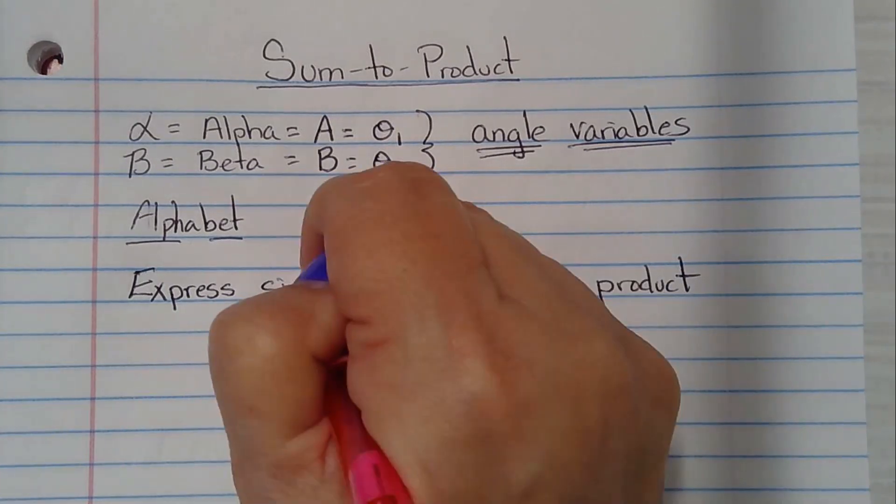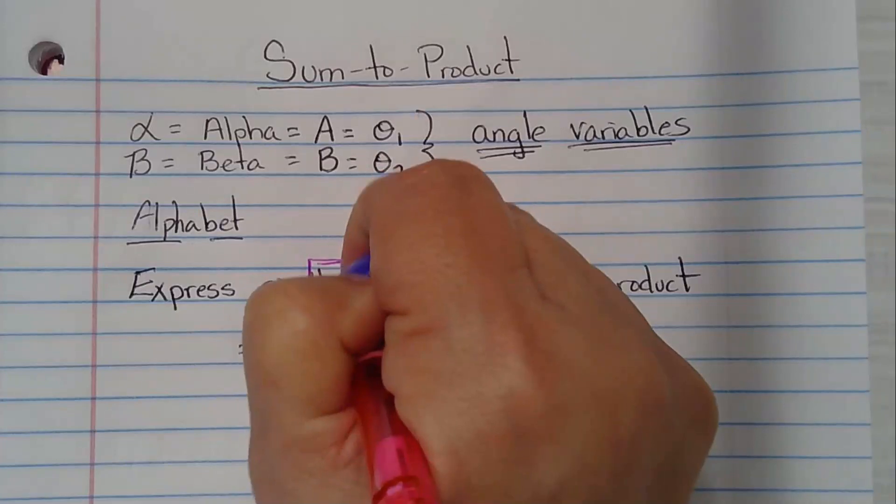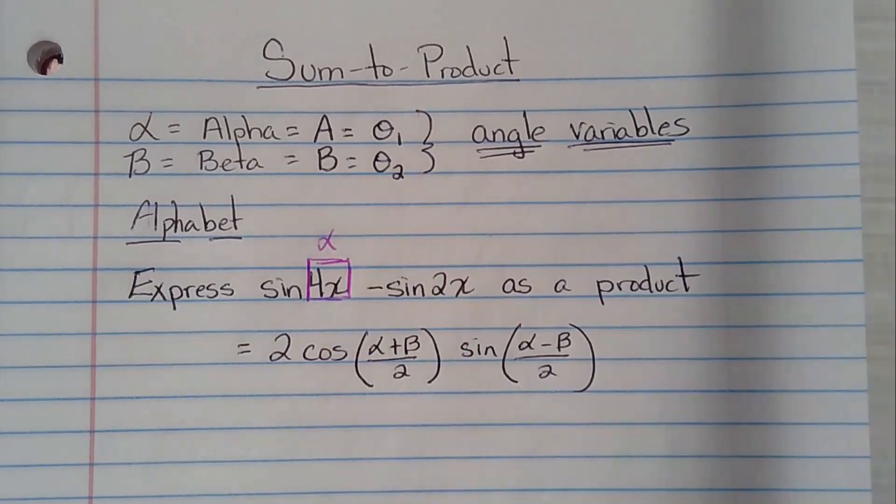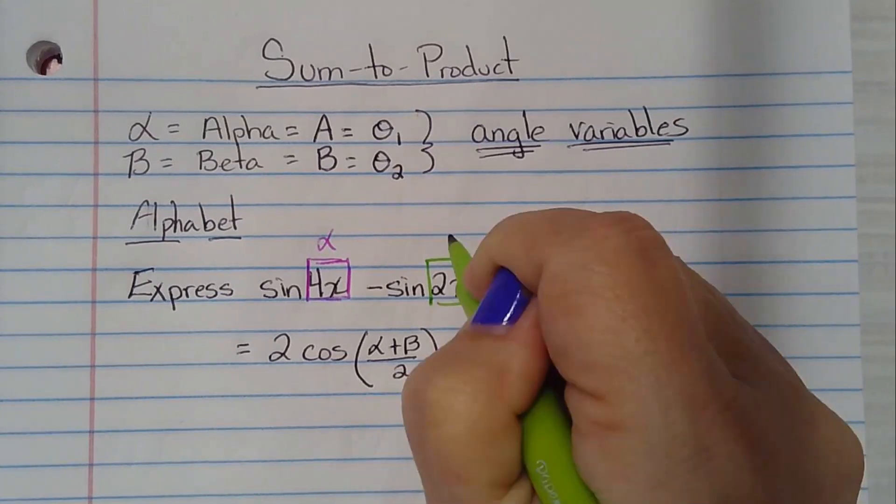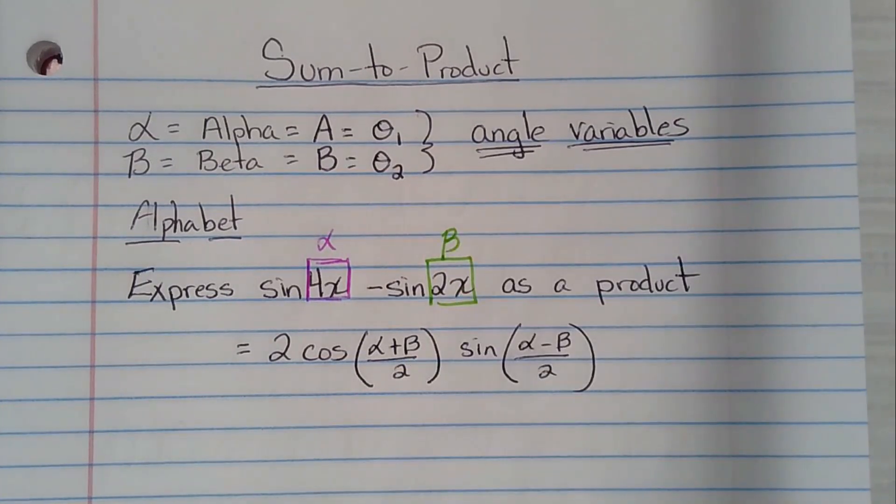So do you see that this 4x is our alpha? Alpha and this 2x is our beta. Those are our two angles, 4x and 2x. So we're just going to substitute those into the formula. Every place there's an alpha, we're putting 4x. Every place there's a beta, we're putting 2x.